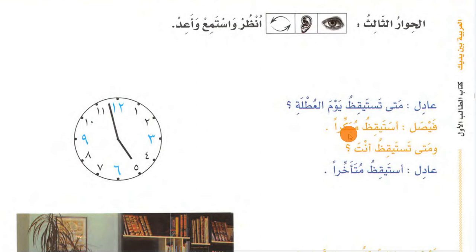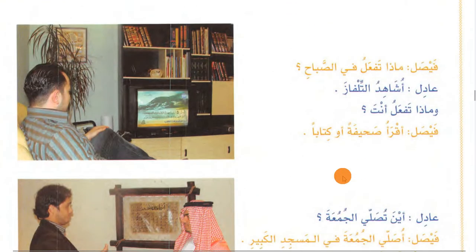And when do you wake up? أستيقظ متأخراً - I wake up late. ماذا تفعل في الصباح - what do you do in the morning? أشاهد التلفاز - I watch television. وأنت؟ فيصل says: أقرأ صحيفة أو كتاباً - I read a newspaper or a book.